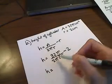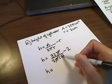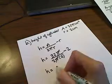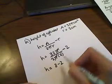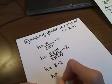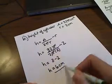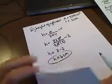And if I simplify that, pi's will cancel. This is a 4 into a 32 is an 8 minus 2. That's that minus 2, so the height here is 6 centimeters. So that's those two problems.